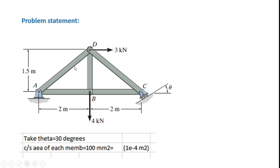The truss structure considered for the analysis in Abaqus is shown here. It is a simple triangular truss structure with a total base dimension of 4 meters and a height of 1.5 meters. The left support is pinned at point A and the right support is a roller at point C, supported on a plane inclined at 20 degrees to the horizontal. The truss is subjected to two loads: a concentrated downward load of 4 kN at point B and a horizontal load of 3 kN at point D. The cross-section area of each member is 100 mm² equal to 1×10⁻⁴ m².